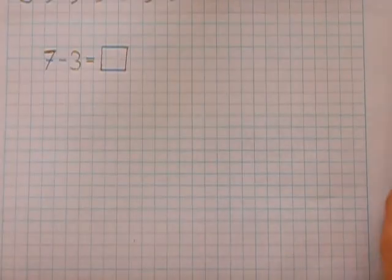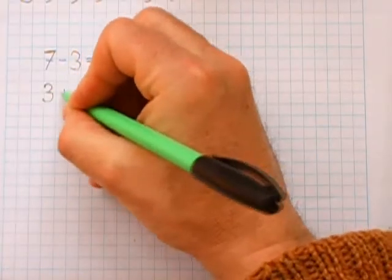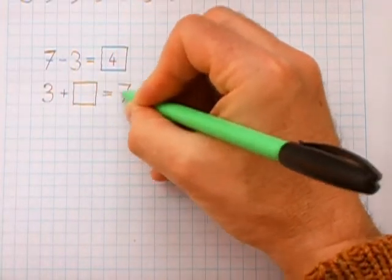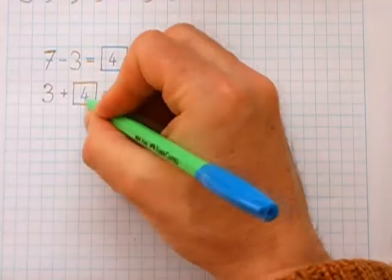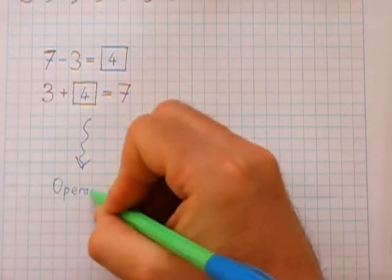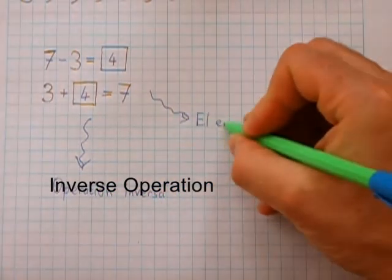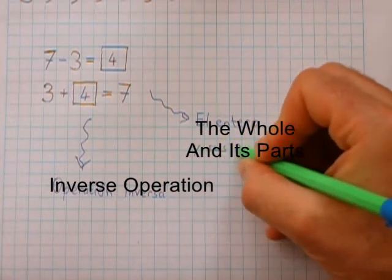So we see that subtracting seven minus three is the same as asking how much do we have to add to three in order to get seven? We can present our subtractions in both ways. So we prepare the children for understanding the principle of the inverse operation, and later the principle of the whole and its parts.